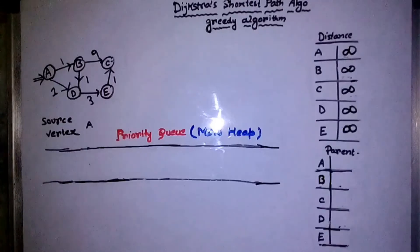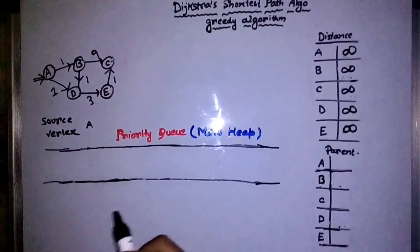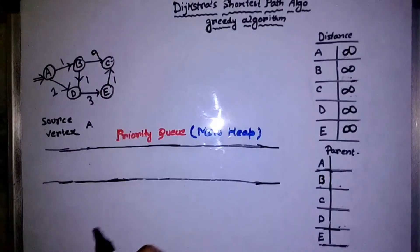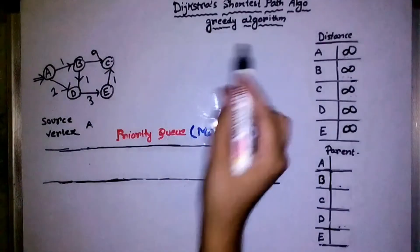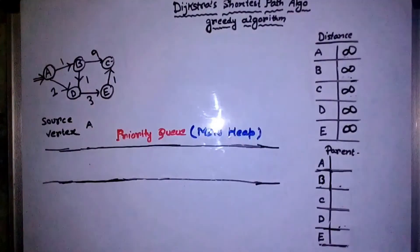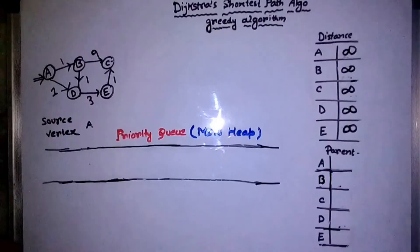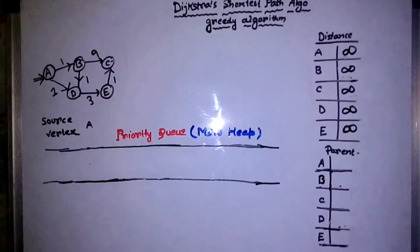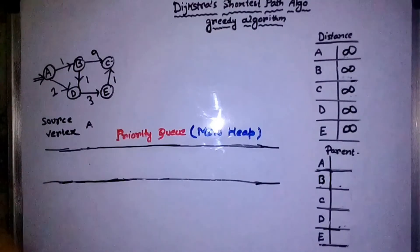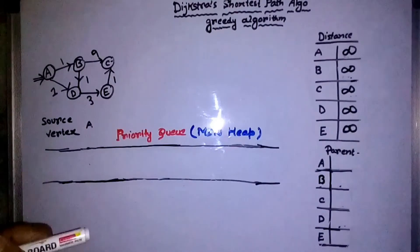Today I'm going to be discussing the Dijkstra single source shortest path algorithm. It's a greedy algorithm. Greedy algorithms are used to solve optimization problems. In the case of an optimization problem, we always try to maximize or minimize something.